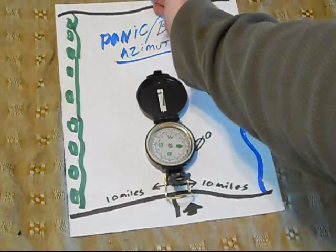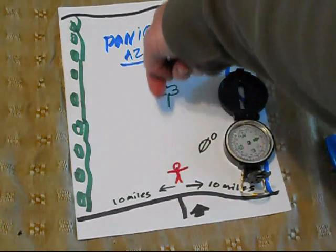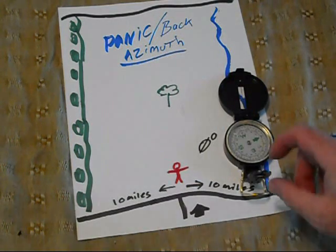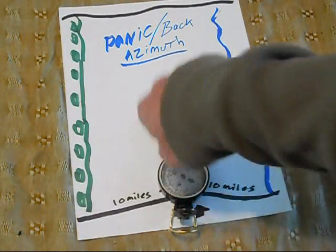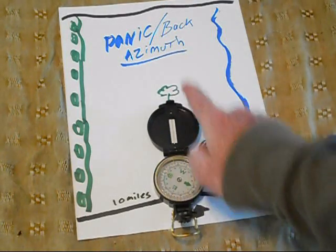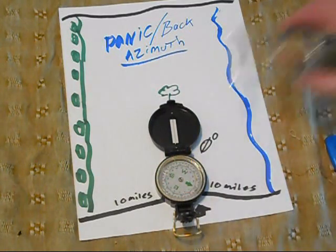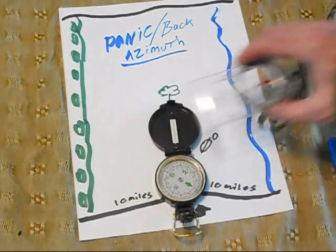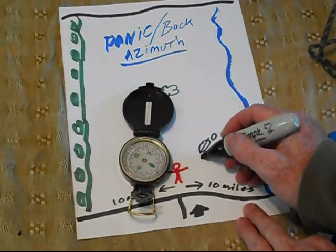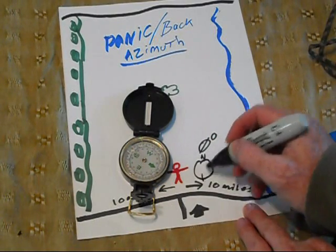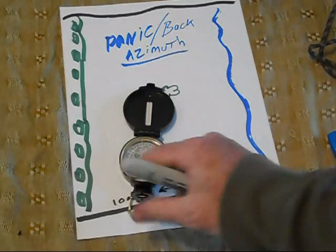If I'm heading out at zero degrees, my back azimuth is going to be exactly the opposite of where I'm heading. There are three ways to figure that out. If I know my compass is pointing zero degrees, I can look at the compass and see what's exactly opposite. This compass has a south needle, so I know the opposite direction is 180 degrees — because zero degrees is north and directly opposite, which is south, is 180 degrees.